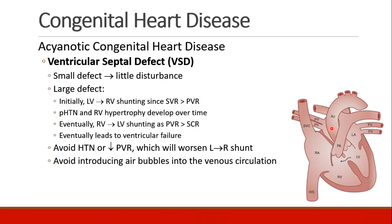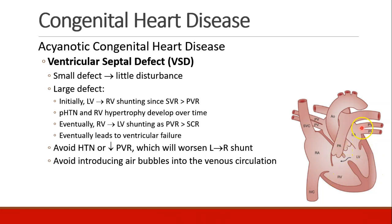Patients can also have a ventricular septal defect, where the shunt is in the ventricle instead of the atrium. Small VSDs actually have very little disturbance, but as the defect becomes larger, patients will first have shunting from the left to the right side, because pressures on the left side are much higher than they are on the right side, and because systemic vascular resistance is much higher than pulmonary vascular resistance.